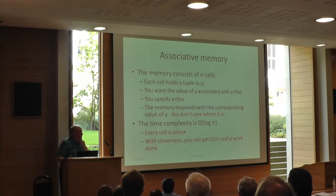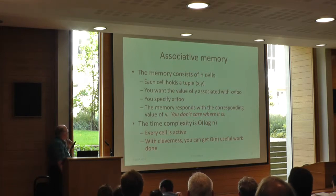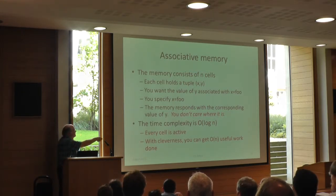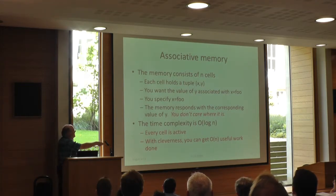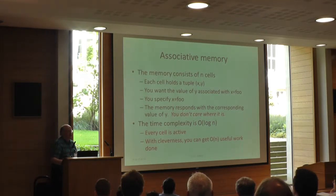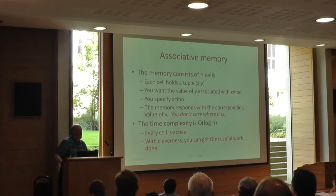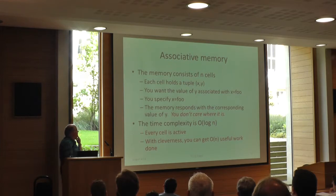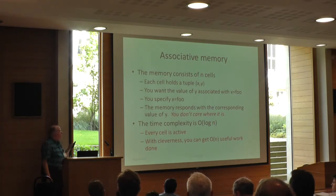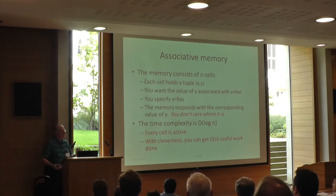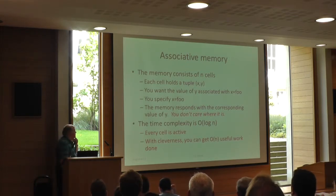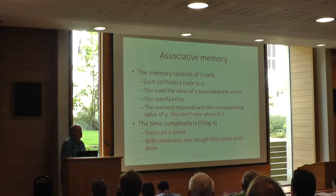The important thing to notice is that on the RAM, all order n of your words are active on every memory access, but we only get order one useful work done, and it's the difference between those which is the reason why the RAM has less power. The approach I'm going to take is motivated by associative memory. The idea is that each cell in the memory contains a tuple, not just a value. You could do a memory fetch where you say x is foo and the memory responds with the corresponding value of y — you don't care where in the memory that is, you care about the data associated with the value you gave. This can be implemented in order log n time, but with cleverness you can do order n useful work.